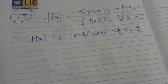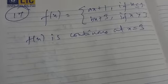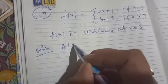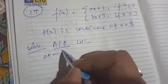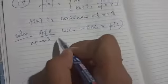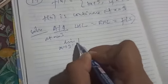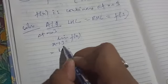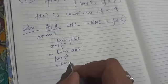For question number 17, we use the continuity concept with two variables a and b. You are asked to find the relationship between a and b, given that the function is continuous at x = 3. Since the function is continuous at x = 3, left hand limit, right hand limit, and the particular value must all be equal. For the left hand limit, limit h tends to 0, the function for x less than 3 is ax + 1, giving 3a + 1.